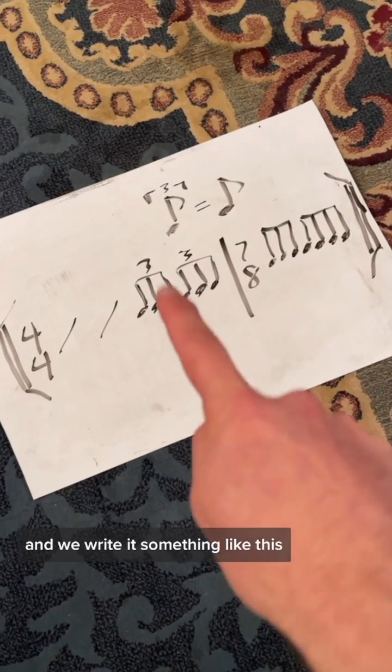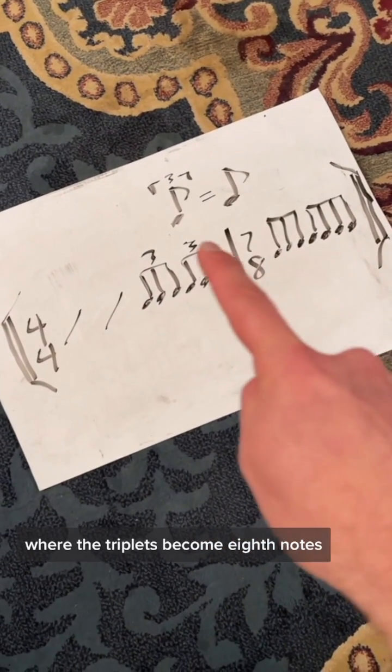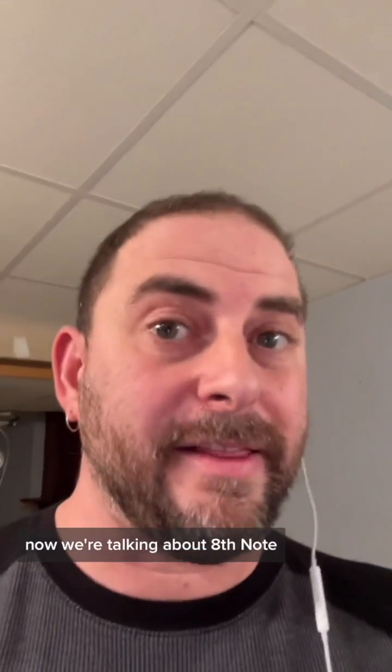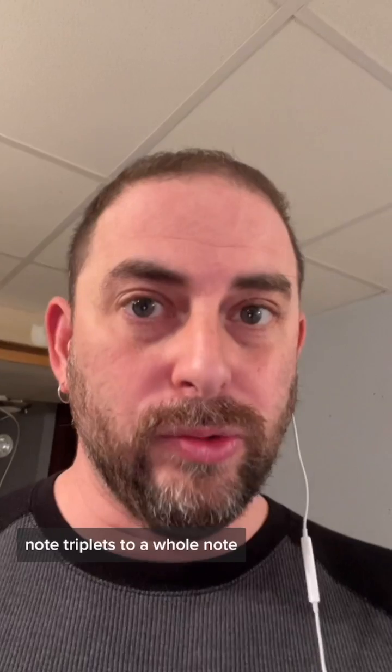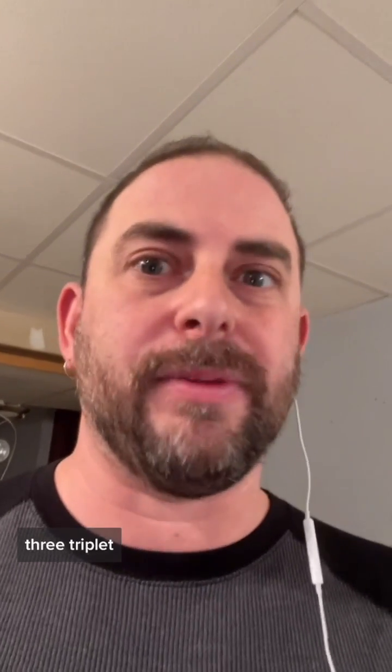And we'd write it something like this, where the triplets become eighth notes. Eighth triplet becomes eighth note. Now we're talking about eighth note triplets here, right? So there's twelve eighth note triplets to a whole note. One triplet, two triplet, three triplet, four triplet.